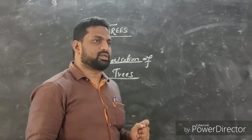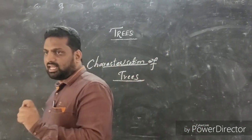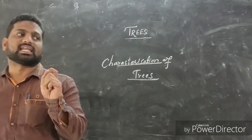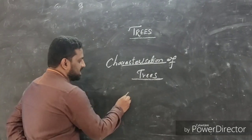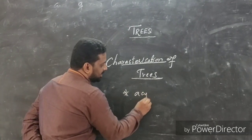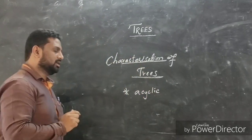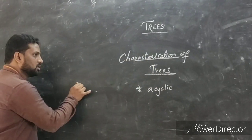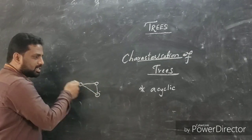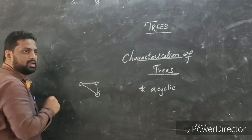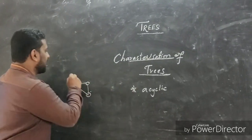The definition of a tree is a graph which is acyclic and connected. First, a graph is cyclic. When a graph is cyclic, if the starting point and the terminus point are both the same, then it is called a cyclic graph.